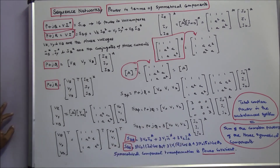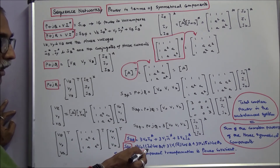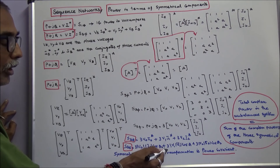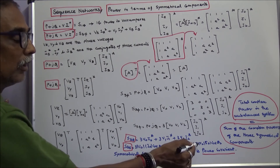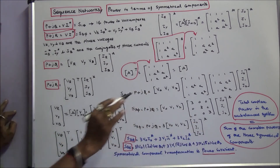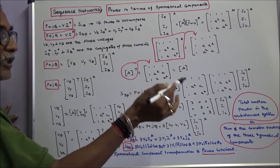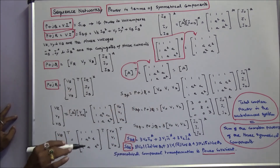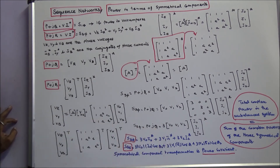Three-phase apparent power equals 3 times V0 times I0 conjugate, plus 3 times V1 times I1 conjugate, plus 3 times V2 times I2 conjugate. Equivalently, this is 3 times |V0||I0|cos(θ0) plus 3 times |V1||I1|cos(θ1) plus 3 times |V2||I2|cos(θ2). The conclusion is that the total complex power in an unbalanced system equals the sum of the complex powers of the three symmetrical components. Therefore, symmetrical component transformation is power invariant.